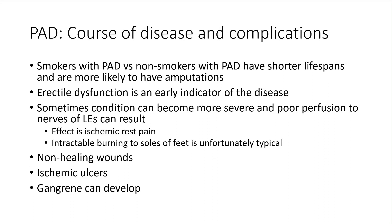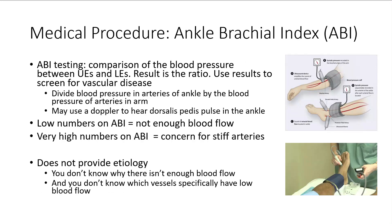Sometimes the condition becomes more severe and poor perfusion of the nerves of the lower extremities can result — that's part of your rest pain. A really typical finding is a burning to the soles of the feet which doesn't stop — intractable pain. They also tend to have wounds that won't heal because there's not enough blood flow to allow healing mediators to come in. They're prone to ischemic ulcers, which can build into gangrene, and this very rapidly becomes a cascade that can lead to limb loss.